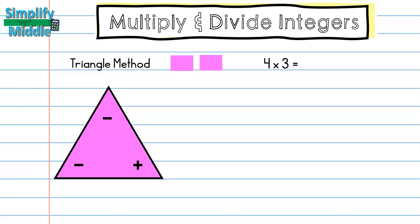Our first problem is 4 times 3. Notice there are no negatives involved, so I wouldn't use the triangle for this — I'd simply say the answer is 12, since two positives always give a positive.